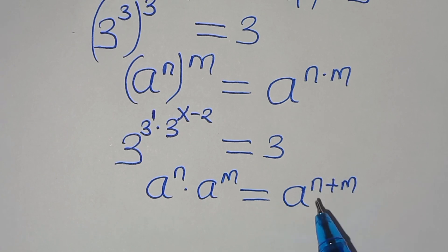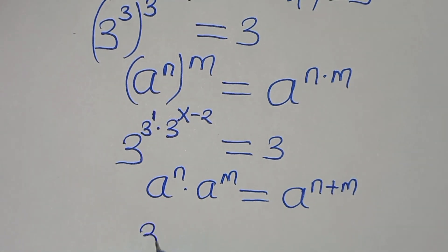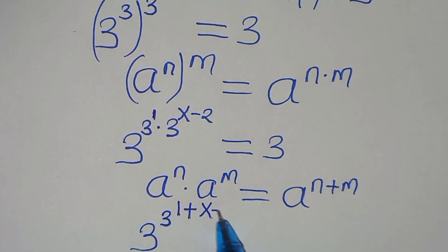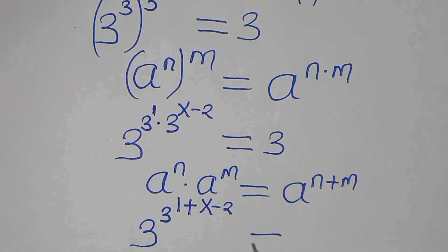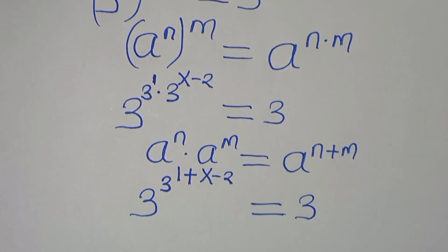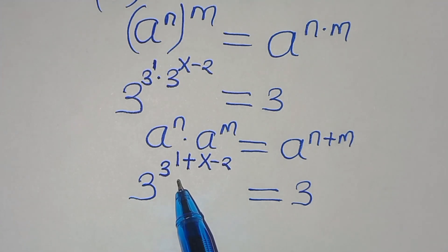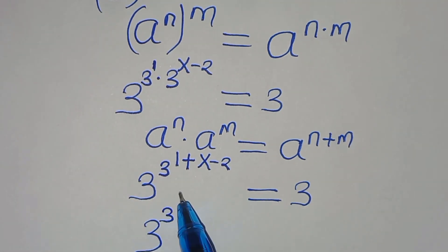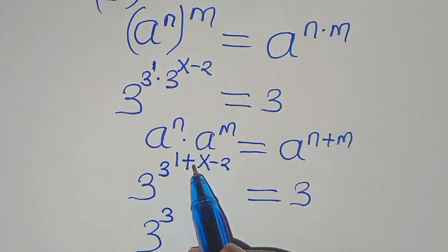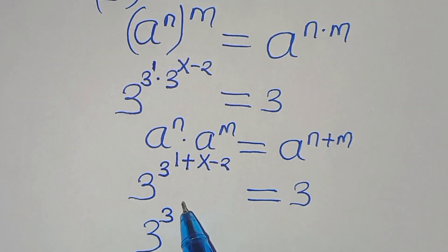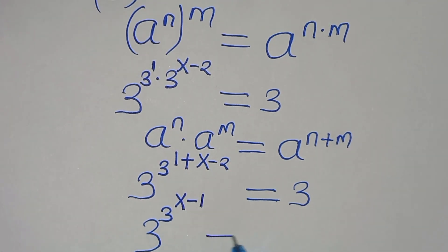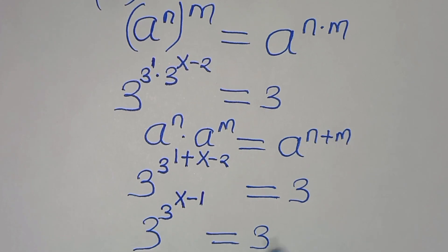Applying this exponent property, we have 3 to the power of 3, raised to the power of 1 plus x minus 2. Simplifying 1 plus x minus 2 gives x minus 1. So we have 3 to the power of 3 raised to the power of x minus 1, equals 3.